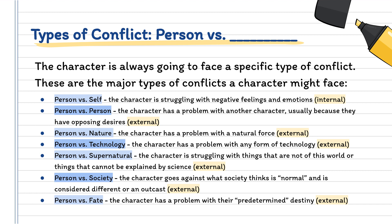Then you have person versus supernatural. This is when the character is struggling with something that's not of this world or something that cannot be explained by science. For example, ghosts, vampires, Bigfoot, witches, any sorts of spirits, or things like multiverses or multiple dimensions. So that is person versus supernatural.